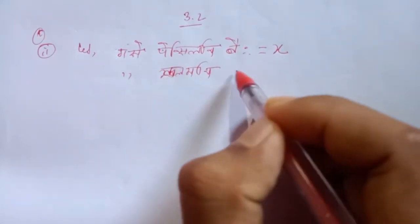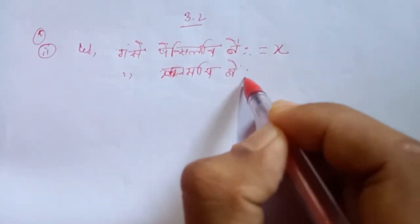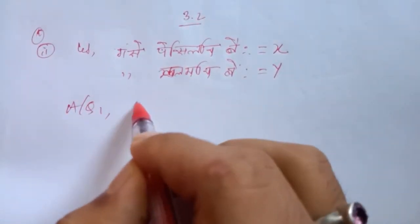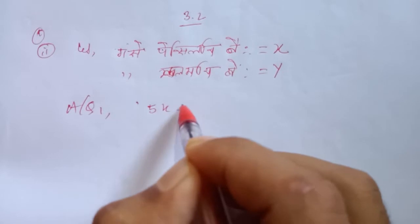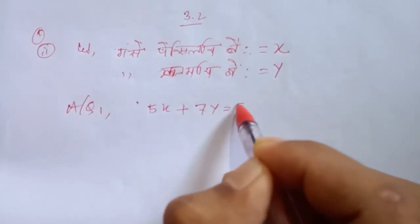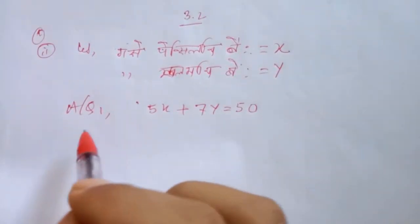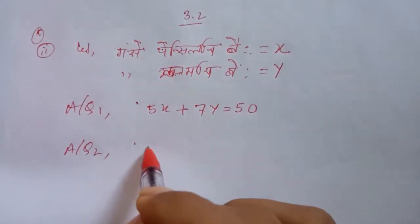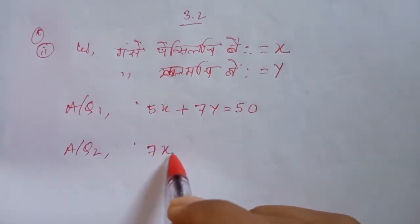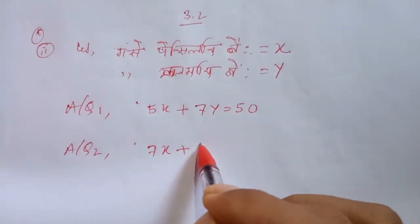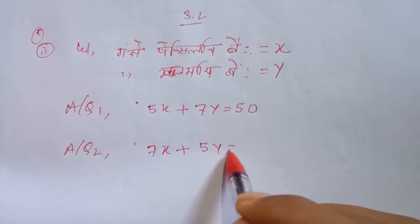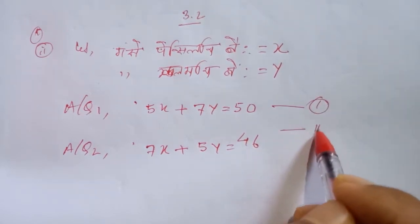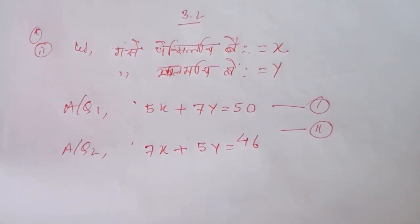So you can see the pencil is equal to x and the column is equal to y. That's interesting. According to question 1: 5 pencils, 5x plus 7y equals 2,250. According to question 2: 7 pencils, 7x plus 5y equals 246. If you want to answer question 1, the answer is 0.